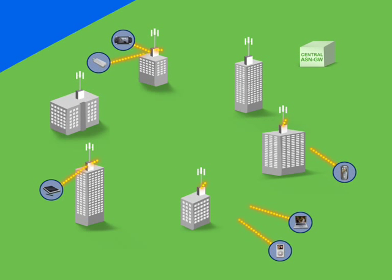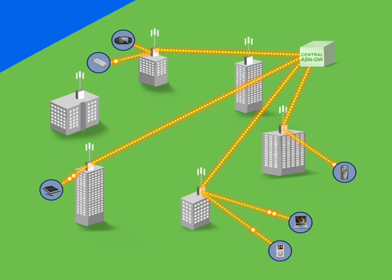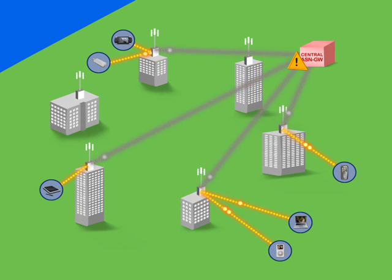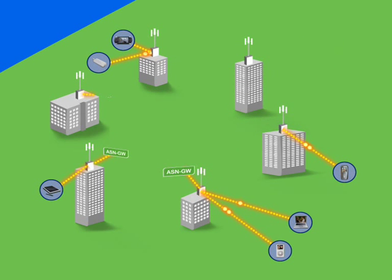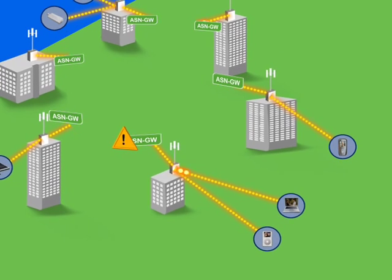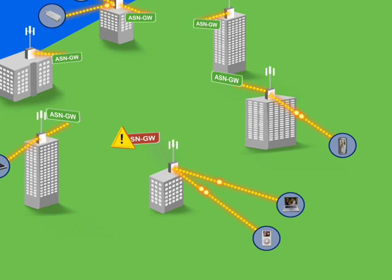A centralized ASN gateway requires a fully redundant, expensive platform. Alvarian's distributed architecture, based on network redundancy, does not consider a single point of failure.